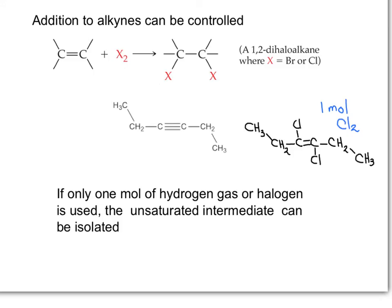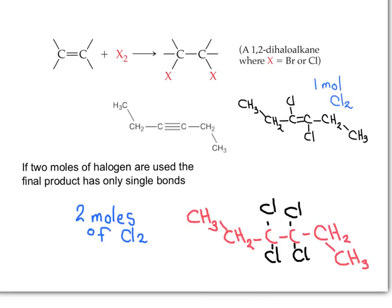Addition of halogens or hydrogen gas to alkynes is very similar to the addition to alkenes; however, this reaction can be controlled. If only one mole of chlorine gas is added to the triple bond, only one of the two pi bonds will be destroyed, and one pi bond will remain in the product — only two chlorines are added and we still have one carbon-carbon double bond (one sigma bond and one pi bond). Using two moles of chlorine, both pi bonds are destroyed to produce single bonds only and a tetrachloroalkane.